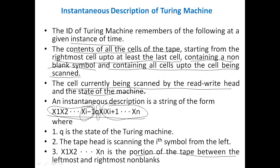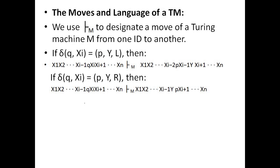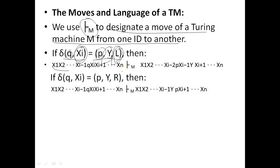We will observe some examples of how to define the ID of a Turing machine. Generally, a move is represented with a special symbol to designate a move of Turing machine M from one ID to another. For example, if delta(Q, Xi) = (P, Y, L), then Q is the state and Xi is the input. This means we move to state P, replace Xi with Y, and move left. The configuration X1...Xi-1, Q, Xi, Xi+1...XN moves to X1...Xi-2, P, Xi-1, Y, Xi+1...XN — replacing Xi with Y and moving left.